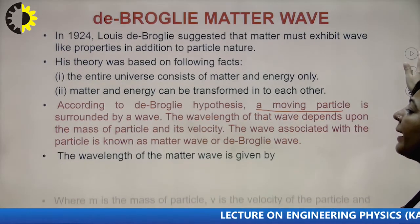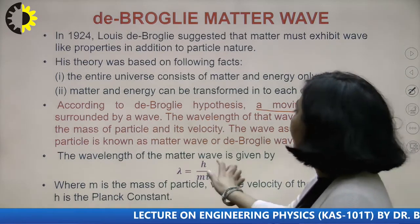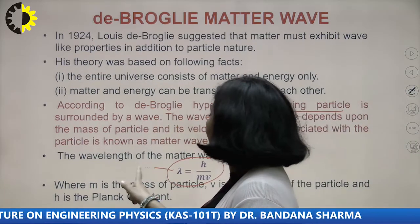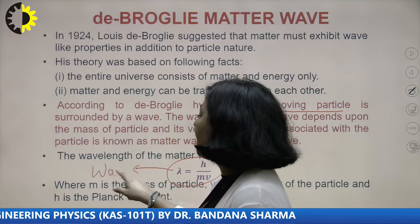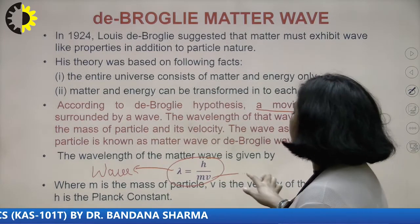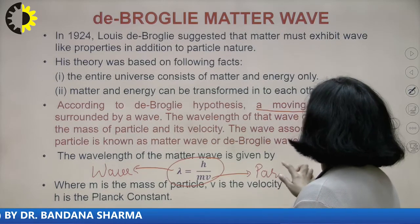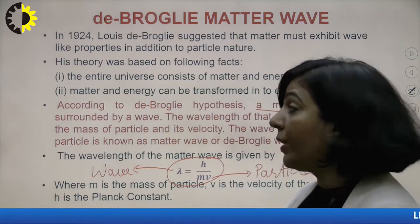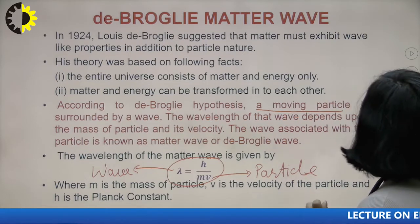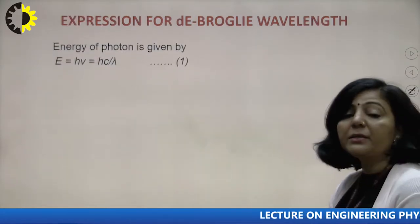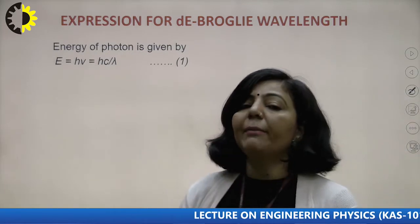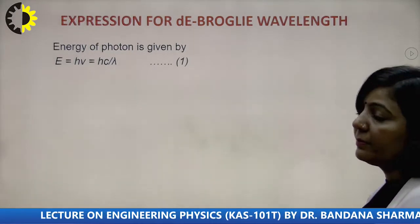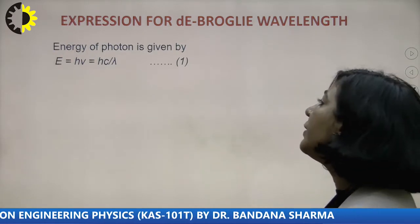The wavelength of the matter wave depends upon the mass and velocity of the particle. The matter wave associated with a moving microscopic particle is called a matter wave or de Broglie wave. The wavelength of the matter wave is given by lambda equals h upon mv. Here lambda represents the wave character, m times v is the momentum representing the particle character, and h is Planck's constant — 6.625 × 10⁻³⁴ joule-seconds.